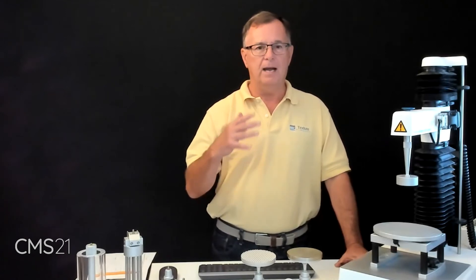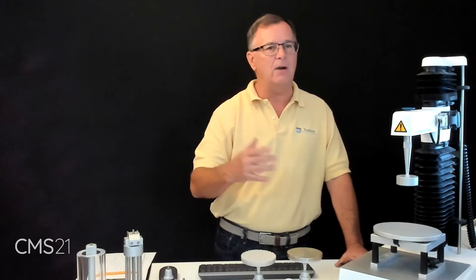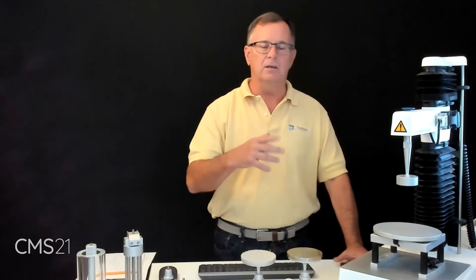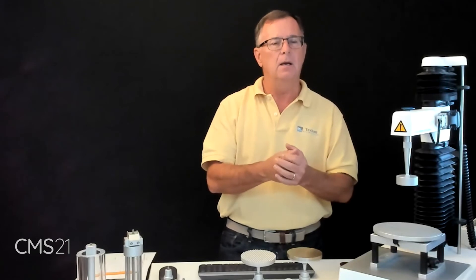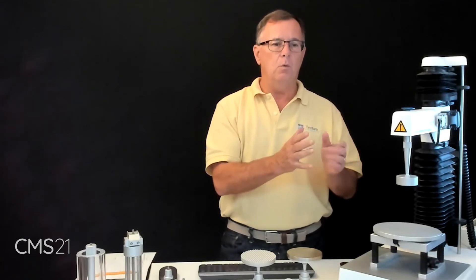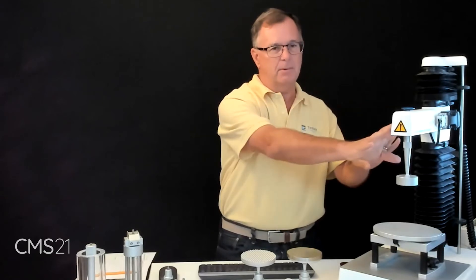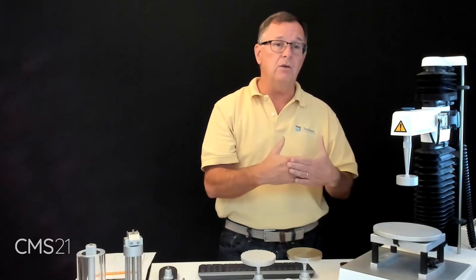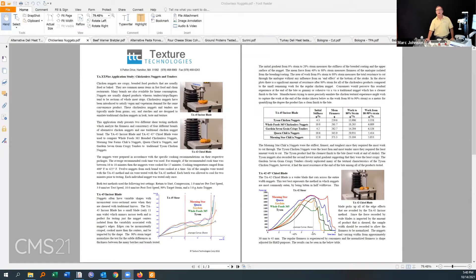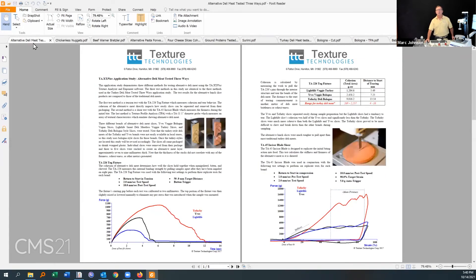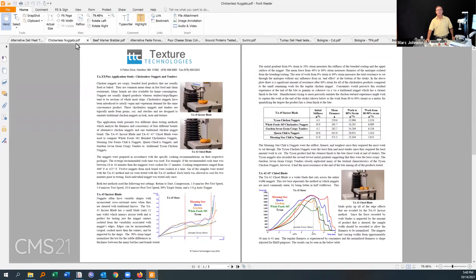In the software itself is a whole host of libraries, probably two or three hundred libraries that are projects. You can look and say, 'How do I test a pate? How do I test a meat? How do I test a baked good?' It's not necessarily geared towards cultured meat, but some of the attributes you want will come out of there, and that's built in. Then we at Texture Technologies - and that's made by Stable Microsystems - all the work that we do, we write our own application studies. Now I'll screen share for a moment. We can see a whole host of different application studies and we give these to our customers.